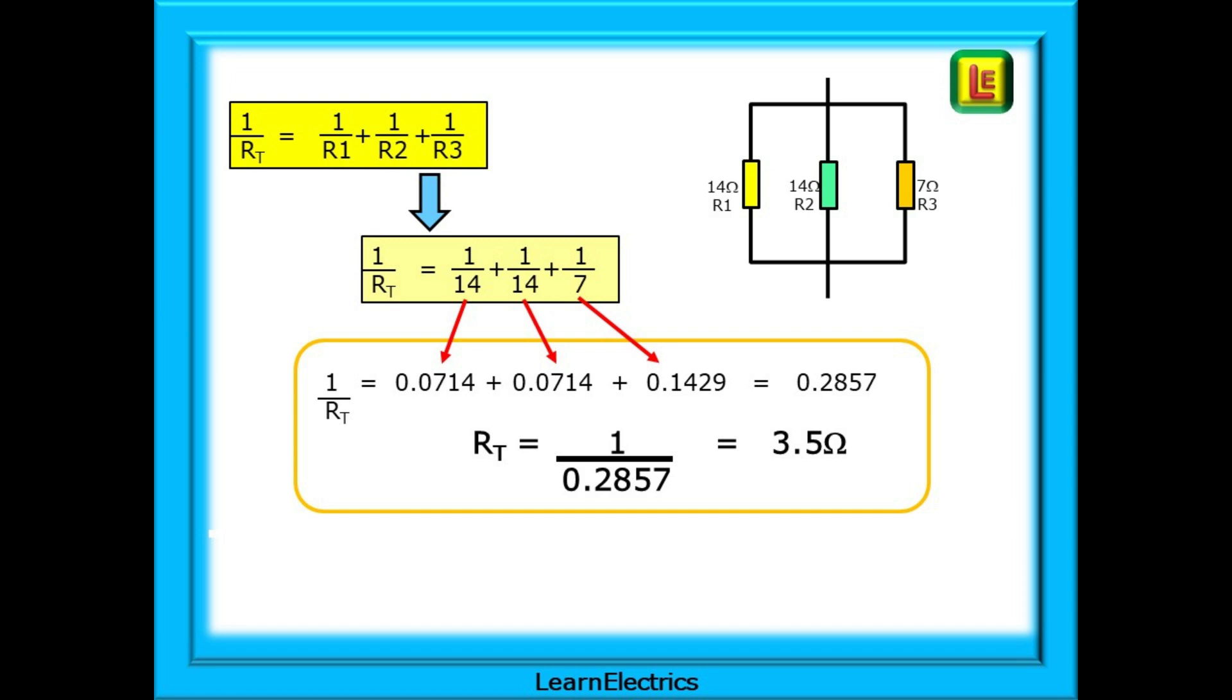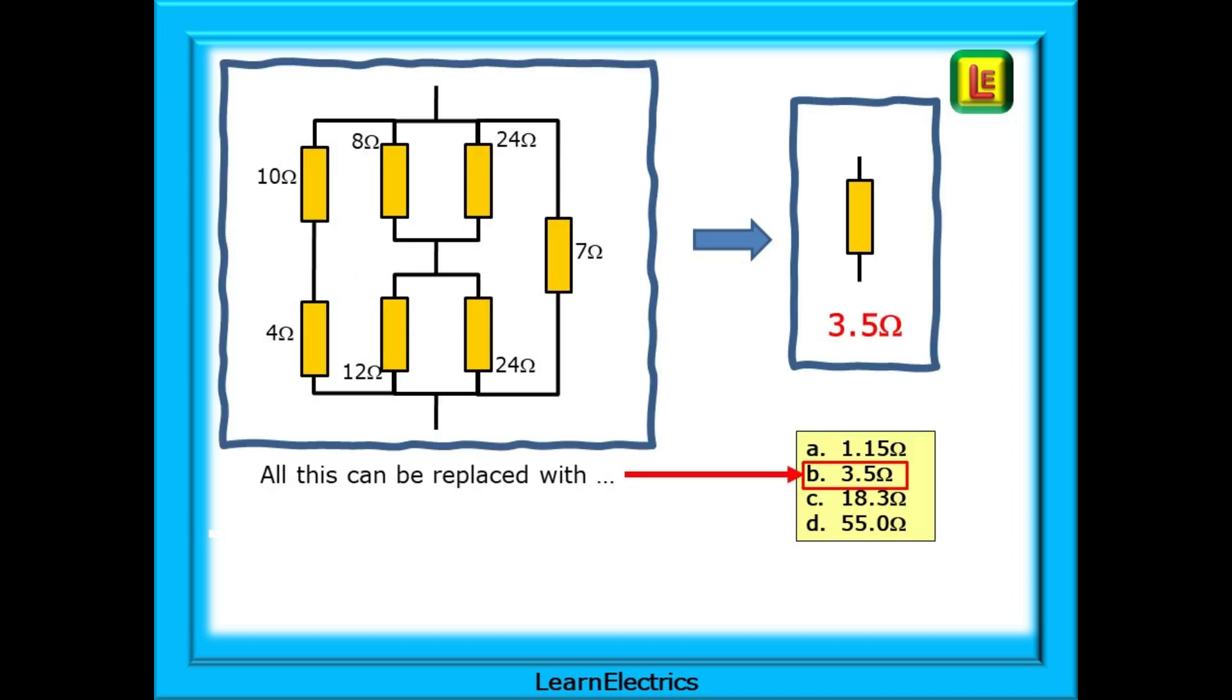And RT, the effective resistance, is 1 divided by 0.2857. Our answer is 3.5 ohms. We should choose answer B. All of this resistor matrix is equivalent to a single 3.5 ohm resistance.